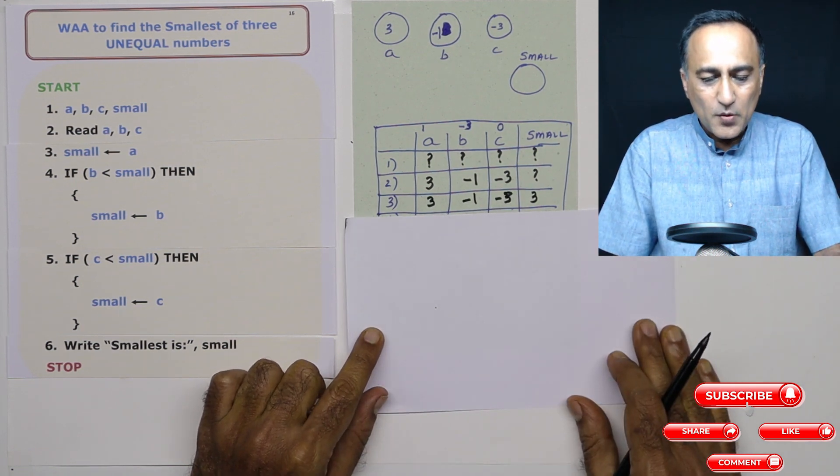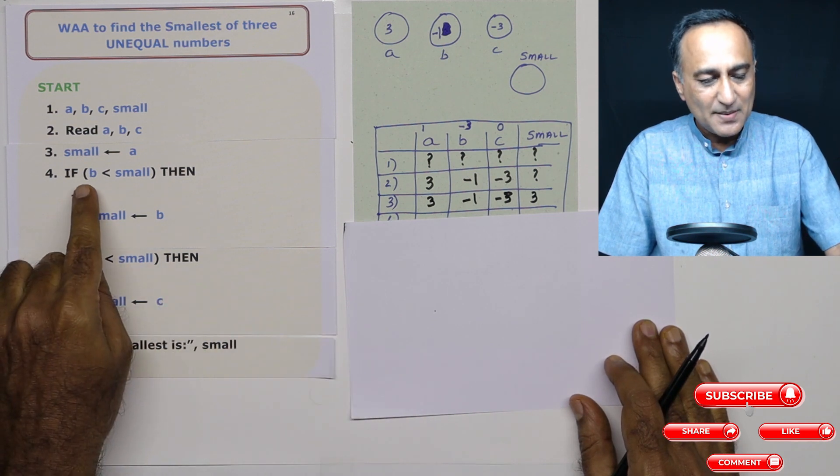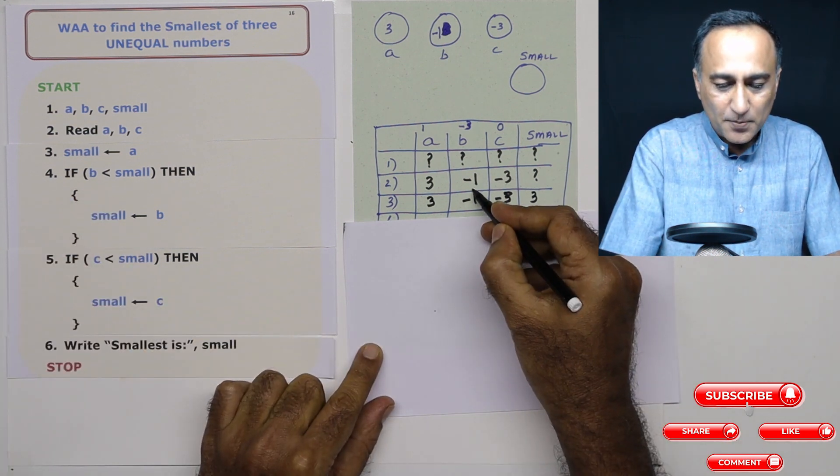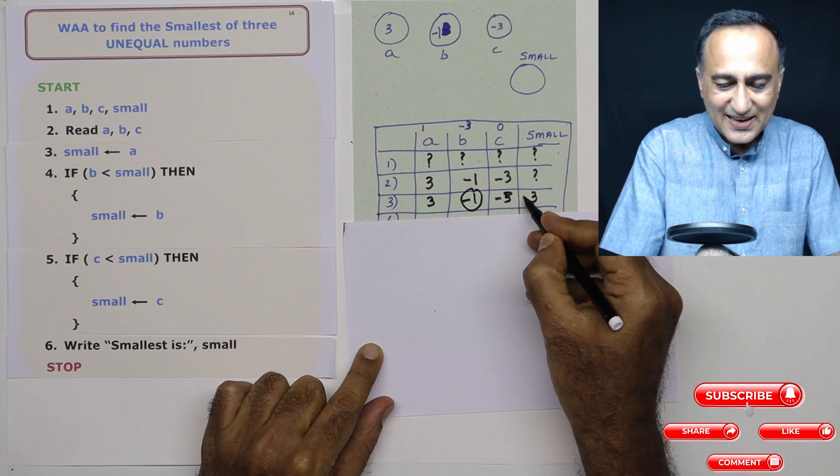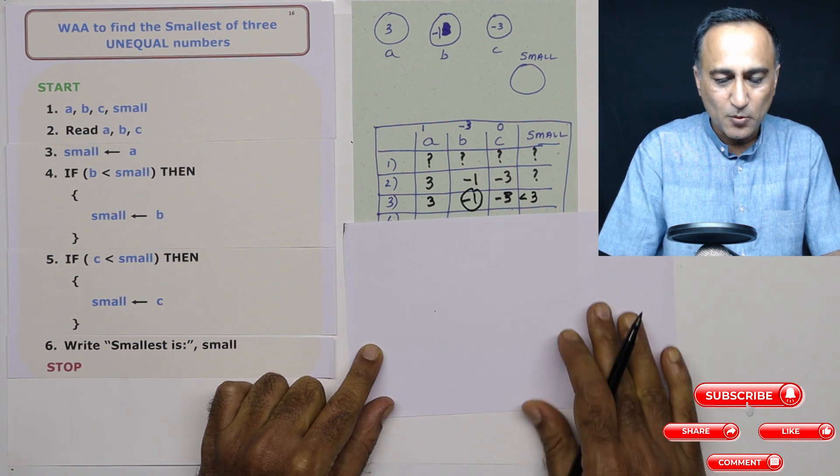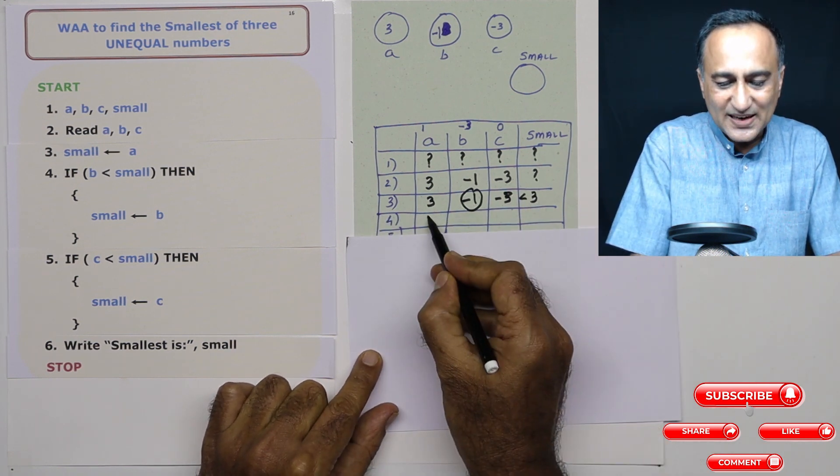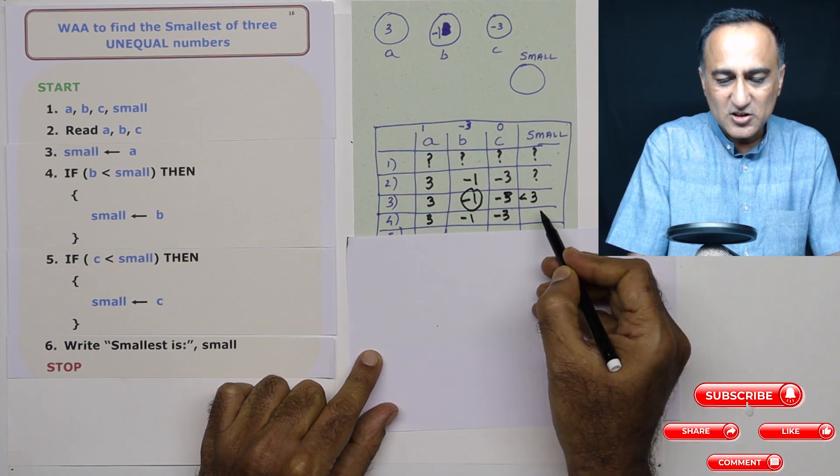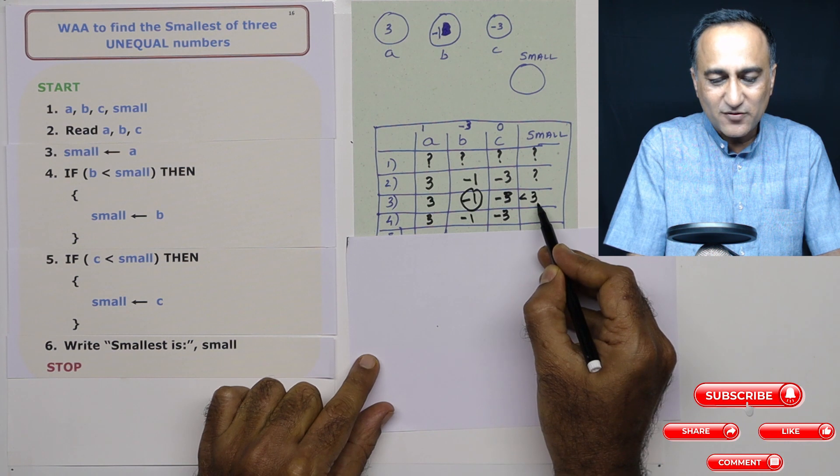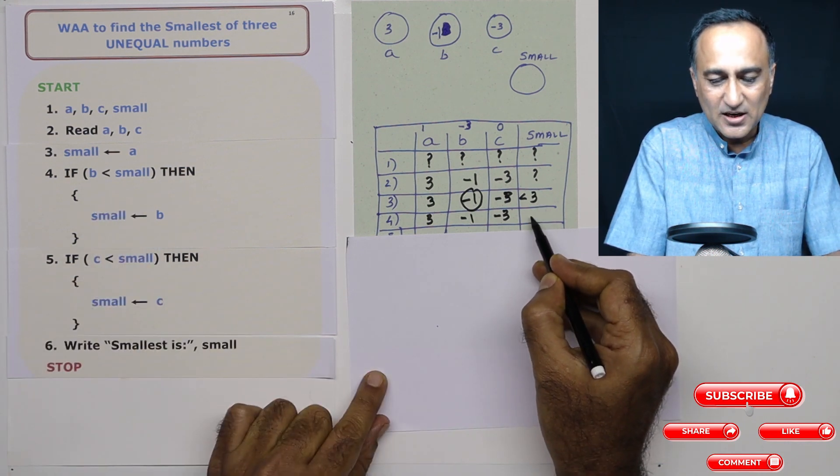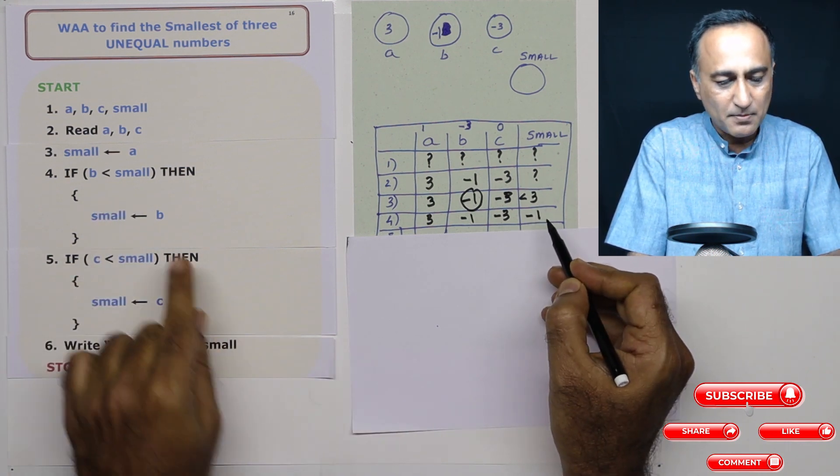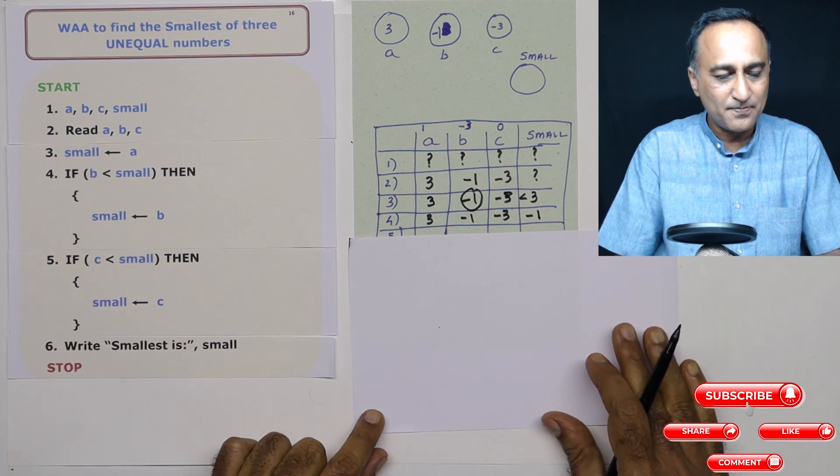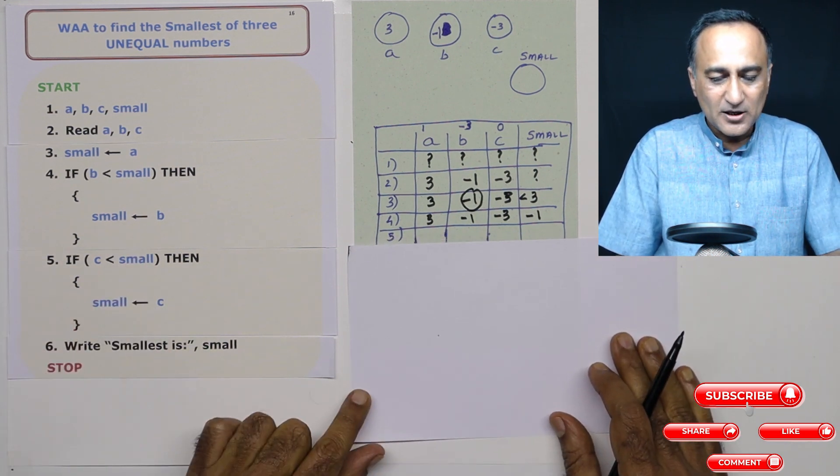Now in step number 4, I am checking if this fellow b is less than this fellow small. So a doesn't change, b doesn't change, c doesn't change, but minus 1 is definitely less than 3. So my new small is going to become minus 1 in this particular step.